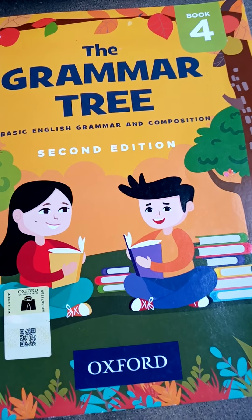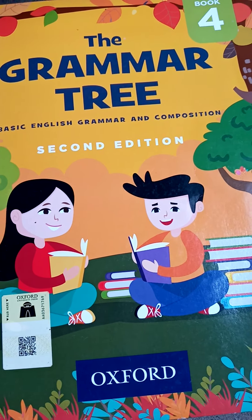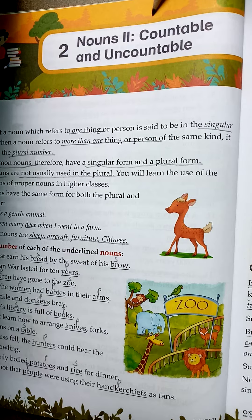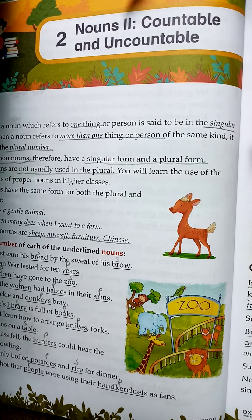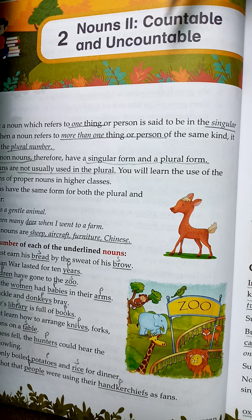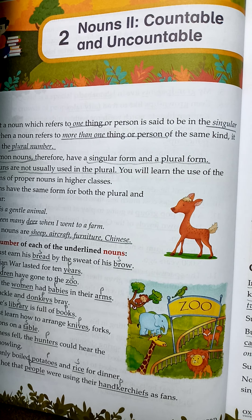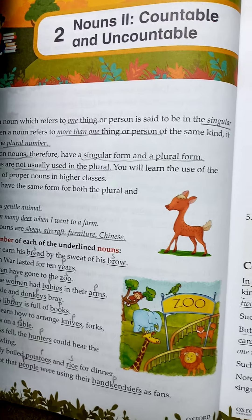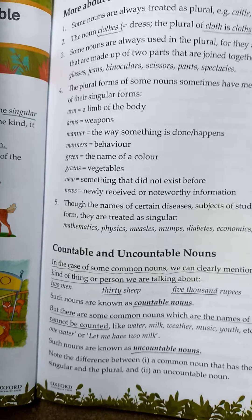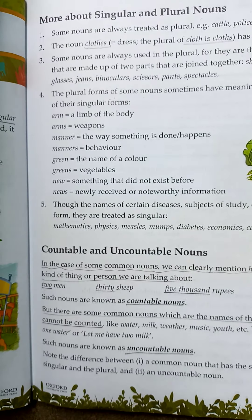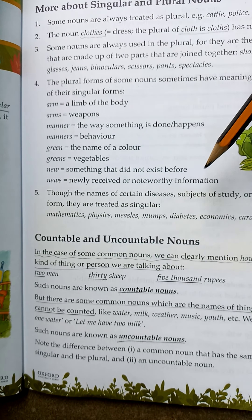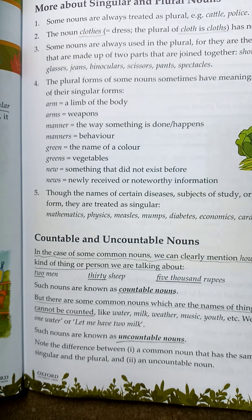As-salamu alaykum. For class, here is your book, The Grammar Tree. So let's open your books at chapter 2: Nouns 2 - Countable and Uncountable. Students, as you all know, we have completed chapter 1, and in our previous lecture we started chapter 2 about countable and uncountable. Today we are going to start our lecture from page number 7: Countable and Uncountable Nouns.